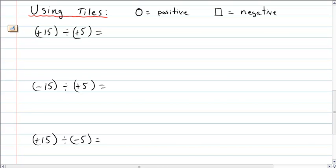I've used circles to indicate positive integers, and I've used squares to indicate negative integers. What I want to do is take a look at this question: we have positive 15 divided by positive 5. The positive 15 equals the number of tiles we're going to use. The positive 5 equals the groups we're going to use.